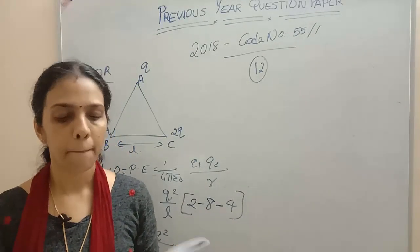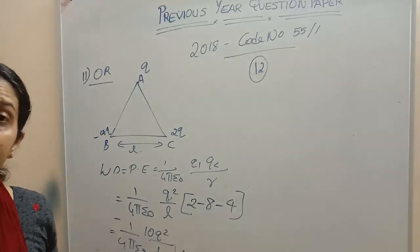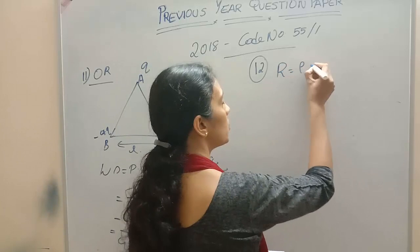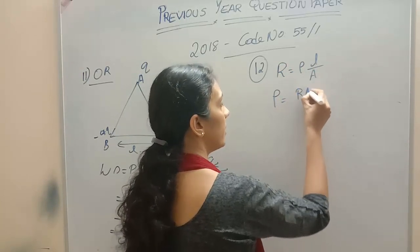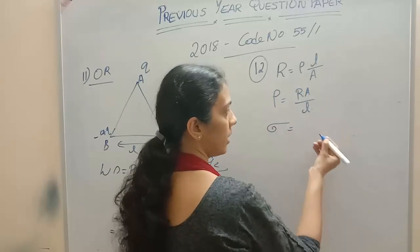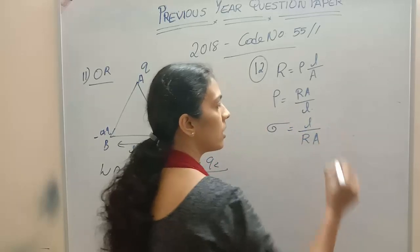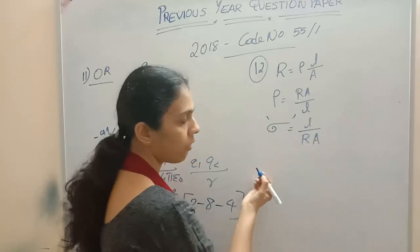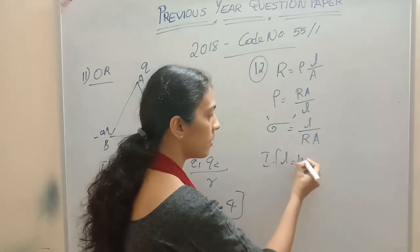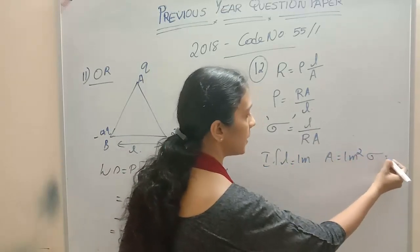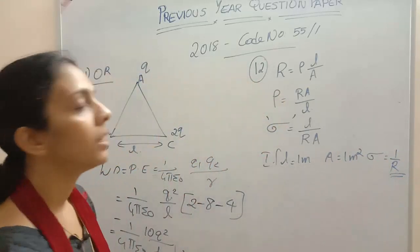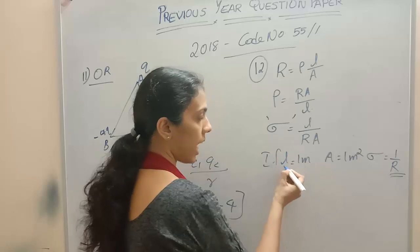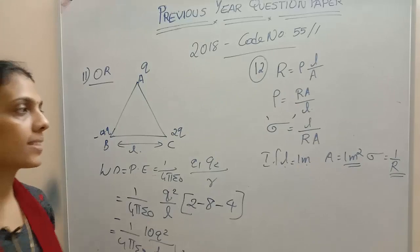Define the term conductivity of a metallic wire and write its SI unit. Conductivity — the reciprocal of resistivity is called conductivity. We know R equals rho times L by A, so rho equals R A by L. Then conductivity sigma equals L by R A. Conductivity is the reciprocal of resistance for a conductor having length 1 meter and area 1 meter square.